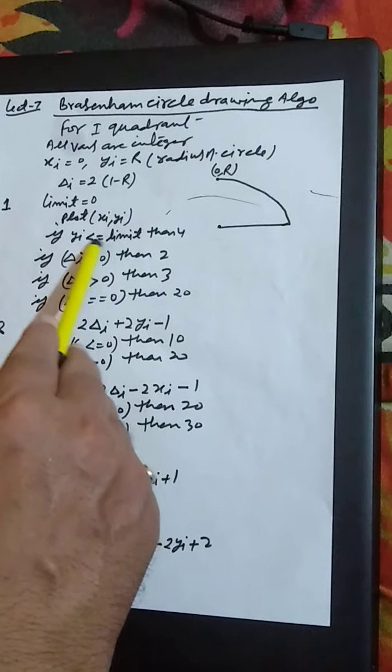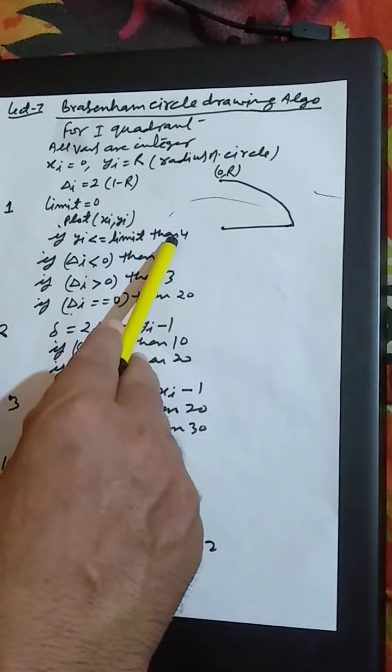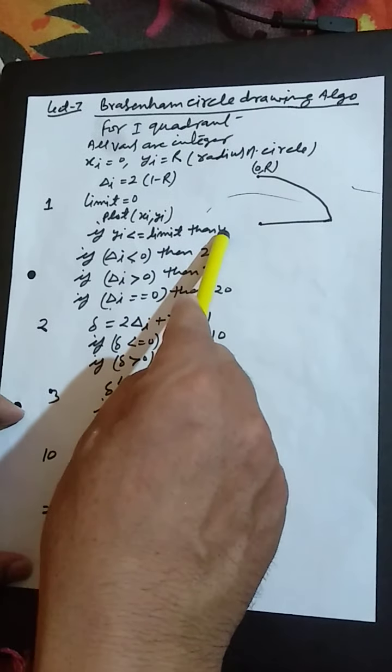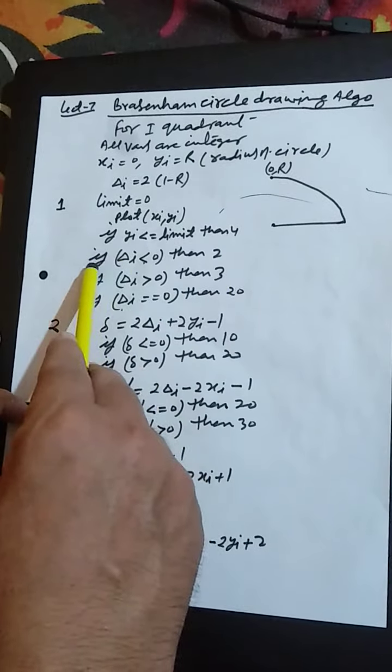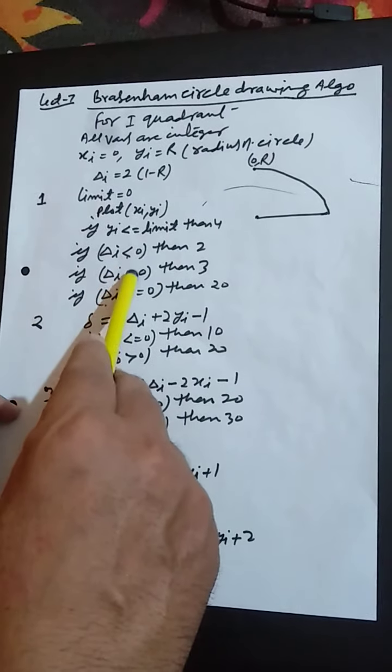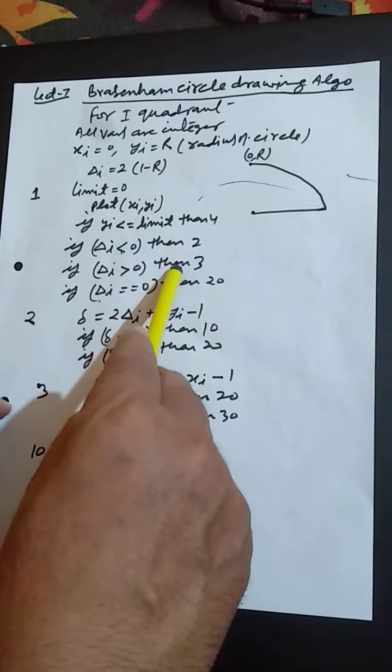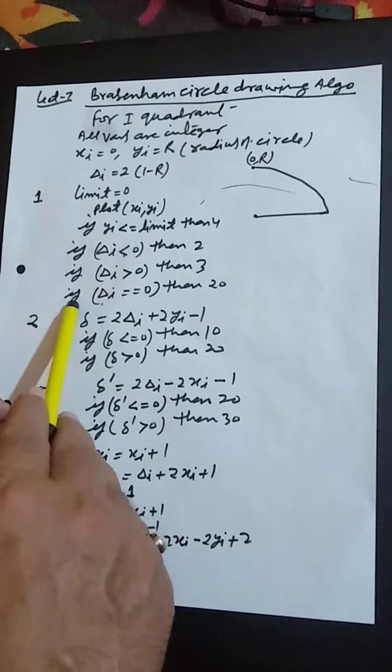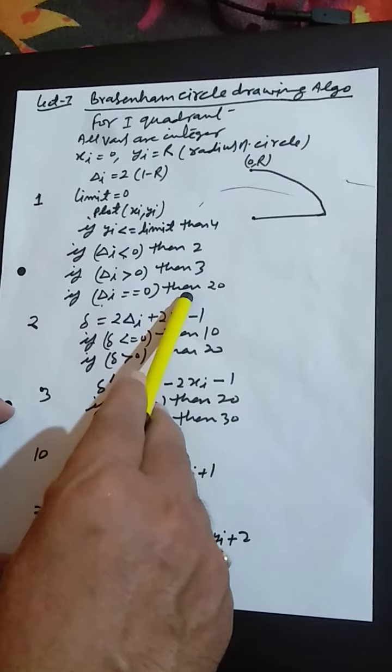If yi is less than or equal to limit, then go to step 4. If delta i less than or equal to 0, then go to step 2. If delta i greater than 0, then step 3. If delta i is equal to 0, then 20.